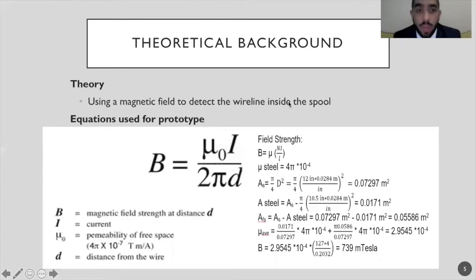Theoretical background. For the theory, we're using magnetic field to detect the wireline inside the spool, and the equation used is the magnetic field strength. We have I for current, mu for permeability, and r for distance from the wire. On the right, you can see the field strength and the calculation for it.